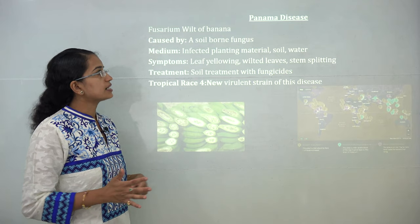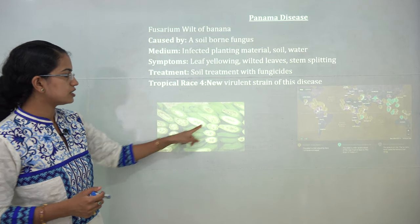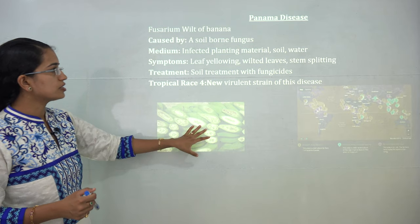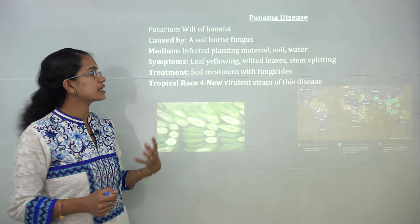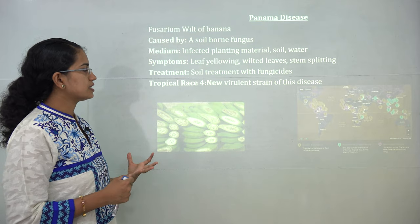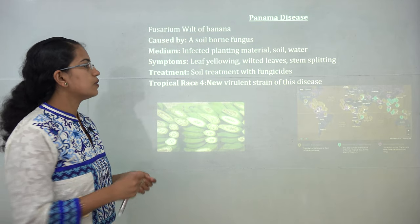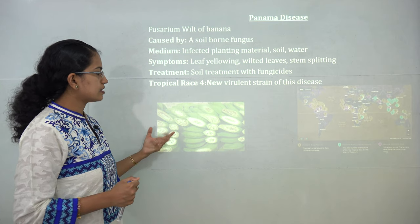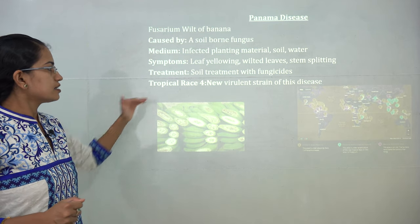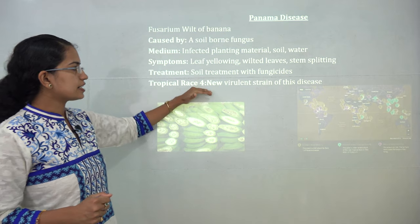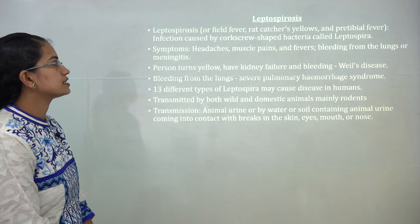Panama disease is the wilting of banana plants. It is caused by a soil-borne fungus that infects the planting material, turning the leaves yellow. The only treatment is treating the soil with fungicides. The Tropical Race 4 is a new and virulent strain of Panama disease.